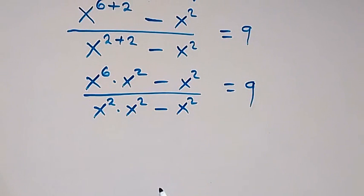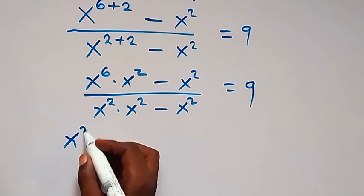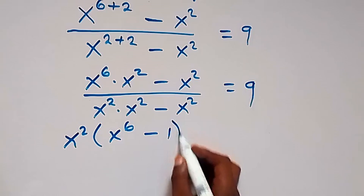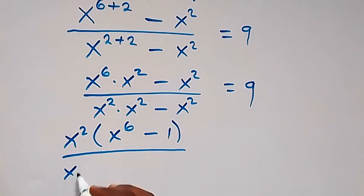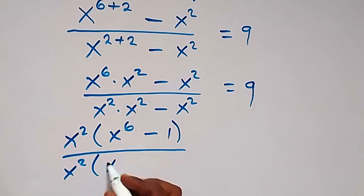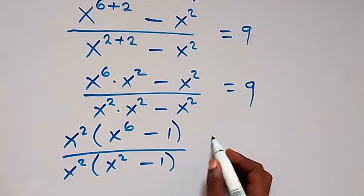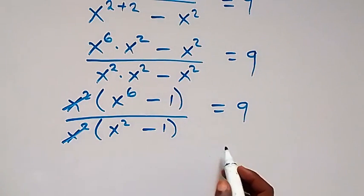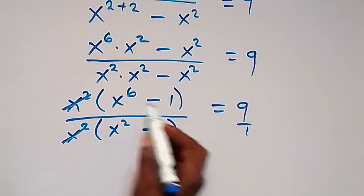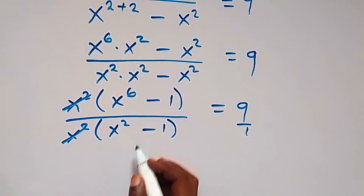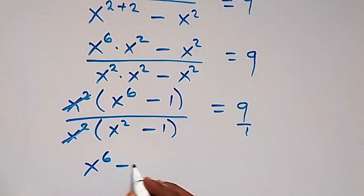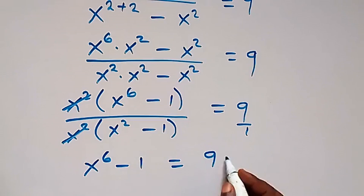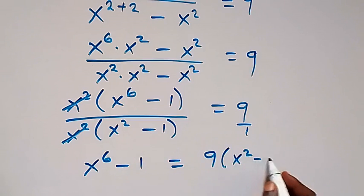Here we have x squared common, we can factor it out. This will be x squared into bracket: what is left here is x raised to power 6, and what is left is 1. Over here we also have x squared common, then we have x squared left, then minus 1, which equals 9. From here, x squared cancels and this is 9 over 1. Cross multiplying gives us x raised to power 6 minus 1 times 1 equals 9 times bracket x squared minus 1.